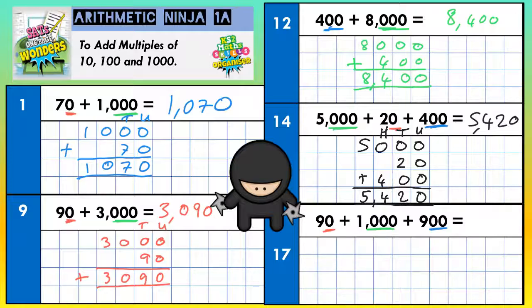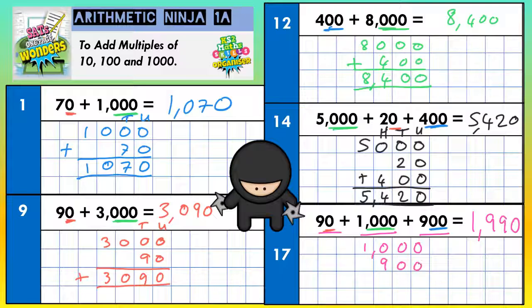For the last one we've got 90 plus 1000 plus 900. Saying biggest to smallest: 1000 plus 900 plus 90 — we virtually get our answer just from saying it: one thousand nine hundred and ninety. Quick double check with the column method: zero plus zero plus zero; zero plus zero plus nine is nine; zero plus nine is nine; one plus nothing plus nothing is one — one thousand nine hundred and ninety.